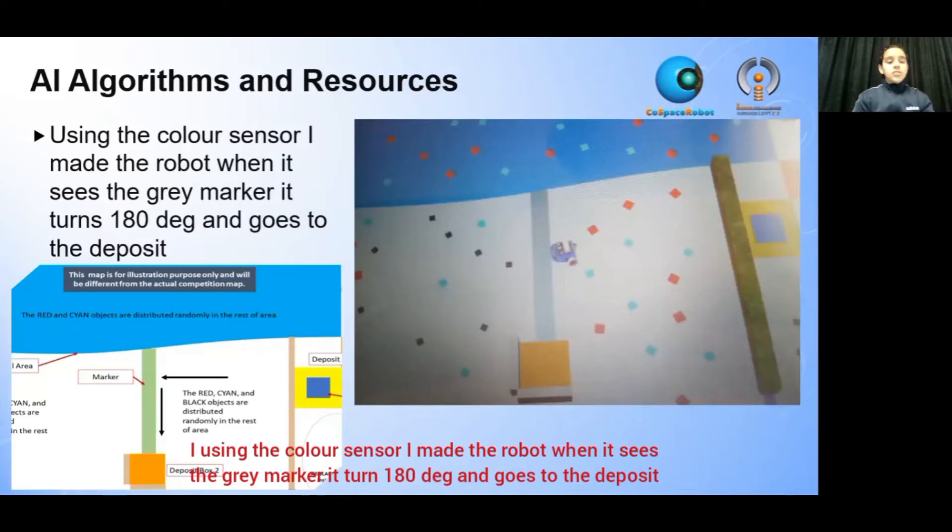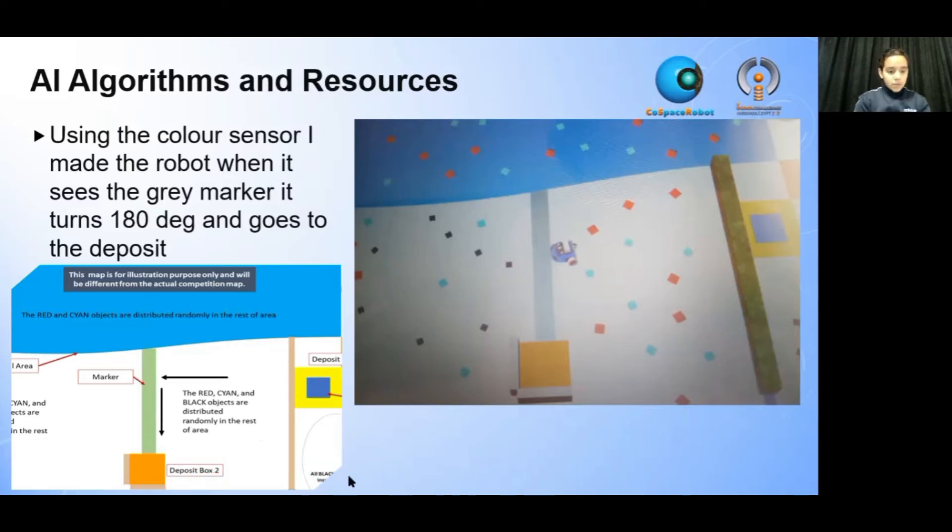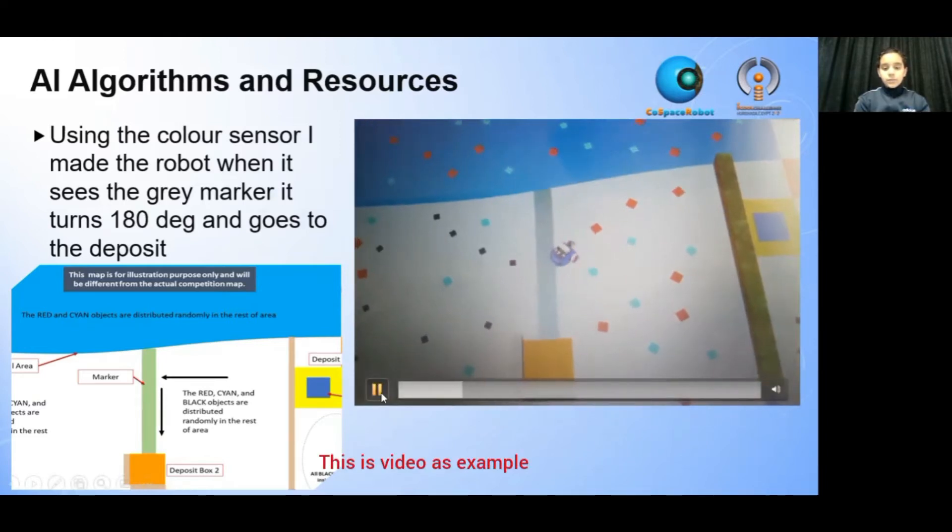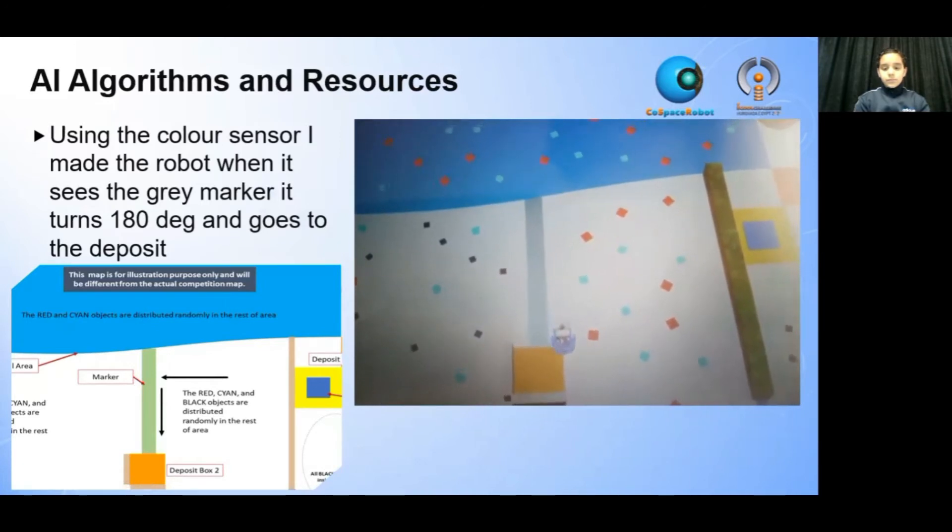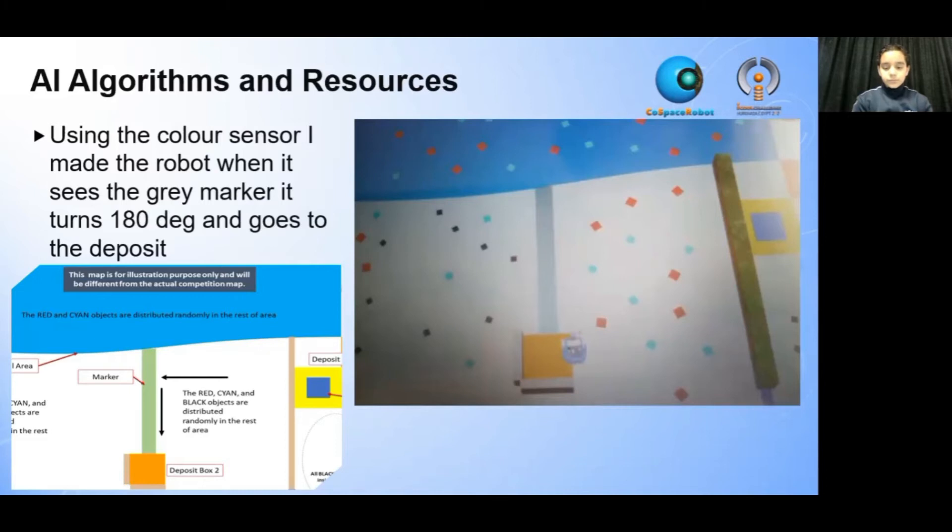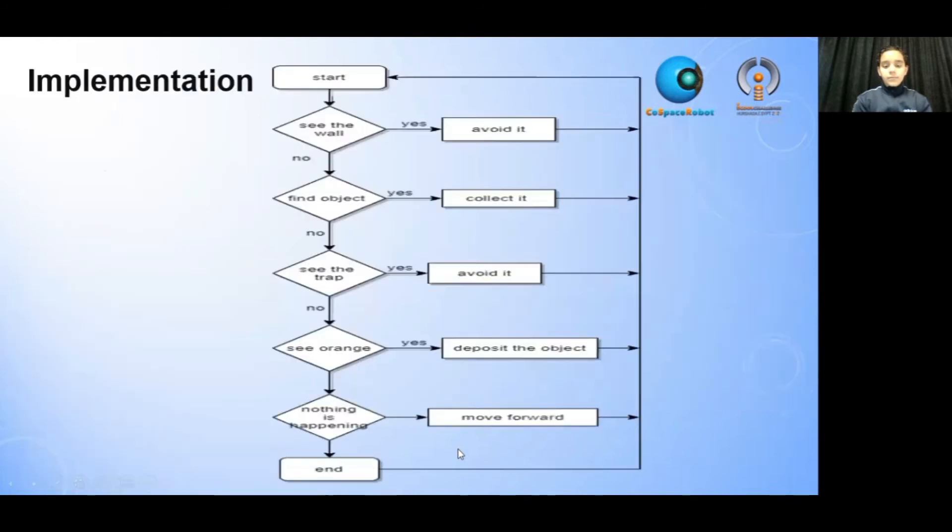Using the color sensor, I made the robot when it sees the gray marker turn 180 degrees to the deposit. Like this, here. Here's an example. This is an example of my code of how it works.